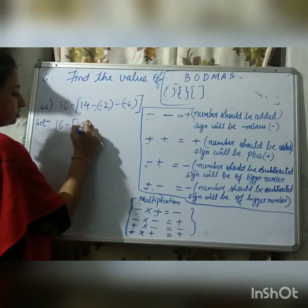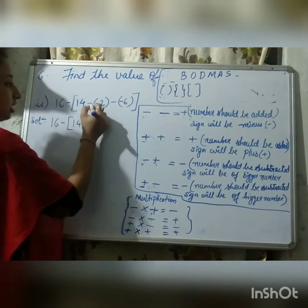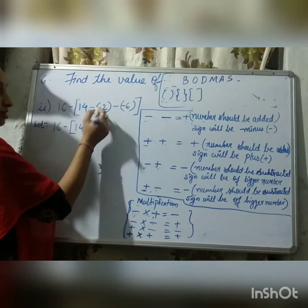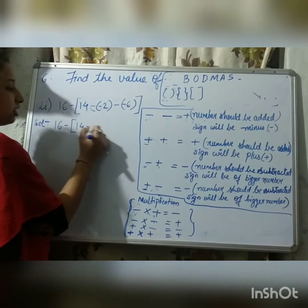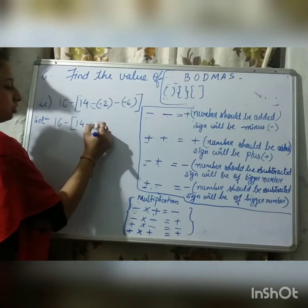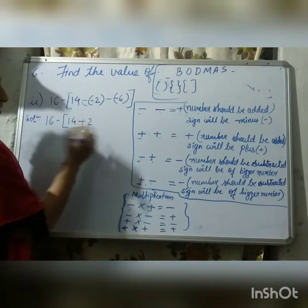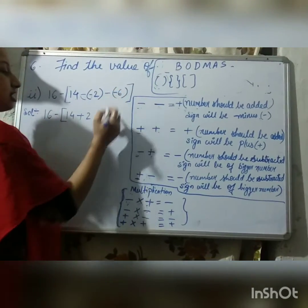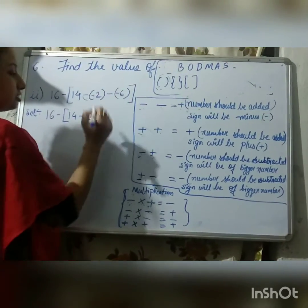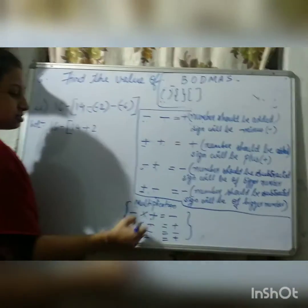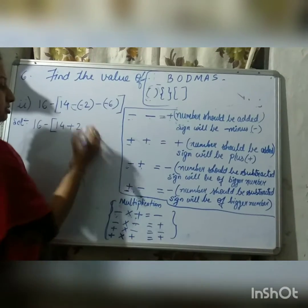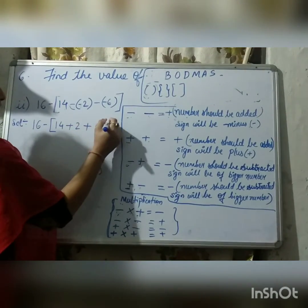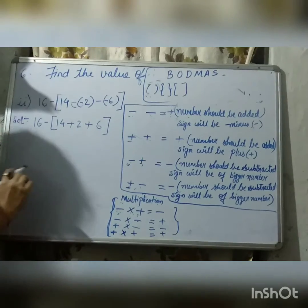So, 14 as it is, we'll write. And we'll open this bracket — this minus will get multiplied with minus, so it will become plus, and 2 will get the plus sign. Again, we'll open the bracket of minus 6. This minus will get multiplied with this minus — minus into minus gives plus — and 6 will be positive.